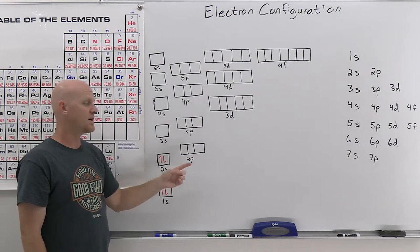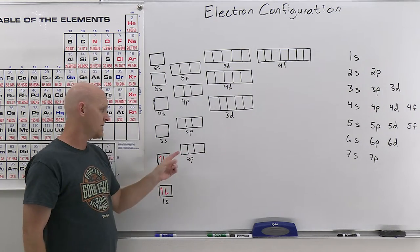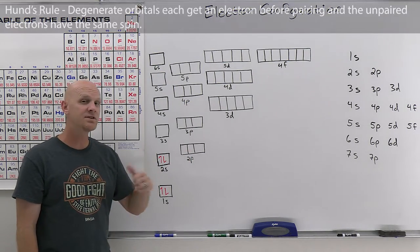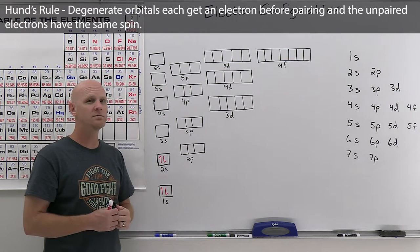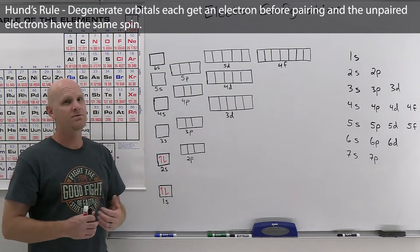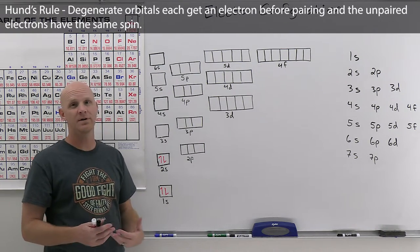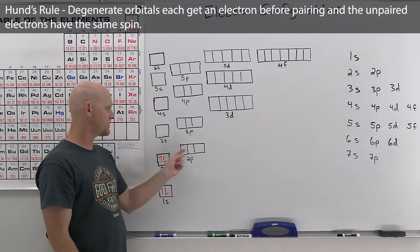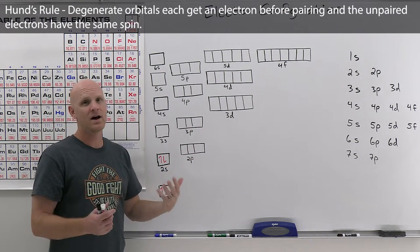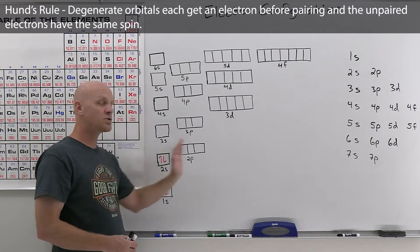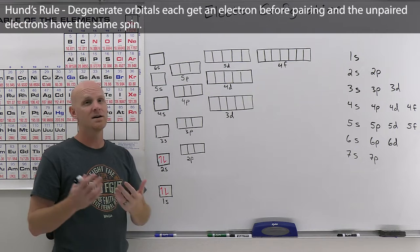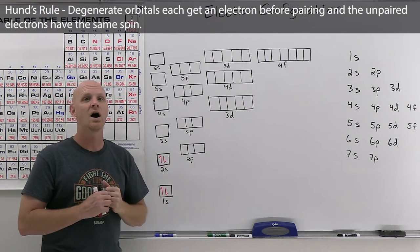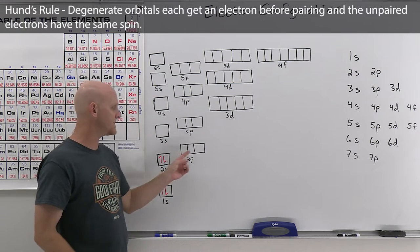Now we move on to filling the 2p. The 2p consists of three degenerate orbitals — they're all in the same subshell and won't split. When filling degenerate orbitals, everybody gets one electron before you ever pair anybody up, and the unpaired ones have to have the same spin — all spin up or all spin down. Normally you fill these left to right, but that's arbitrary; you can go right to left or start in the middle. It does not matter what order you fill a set of degenerate orbitals.